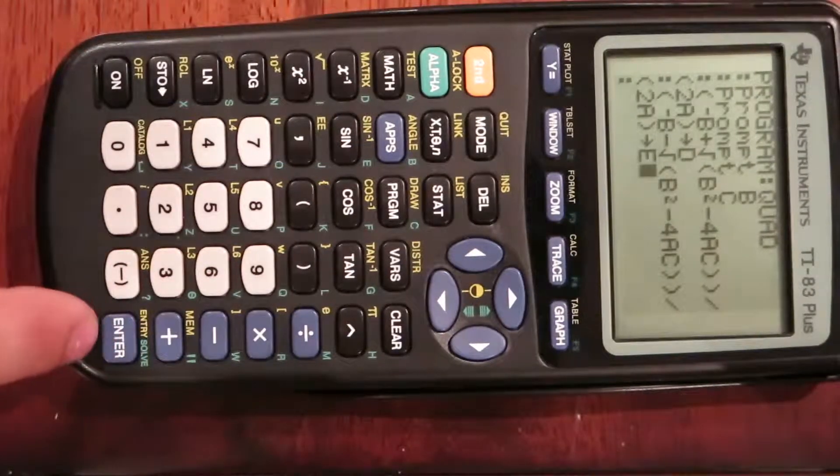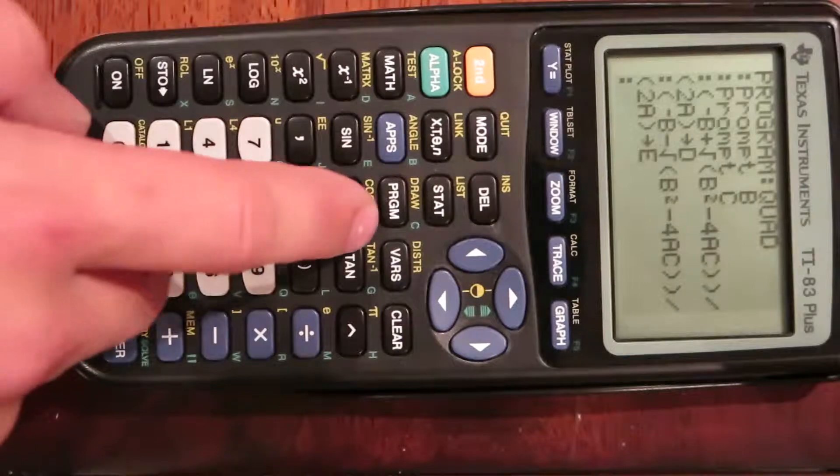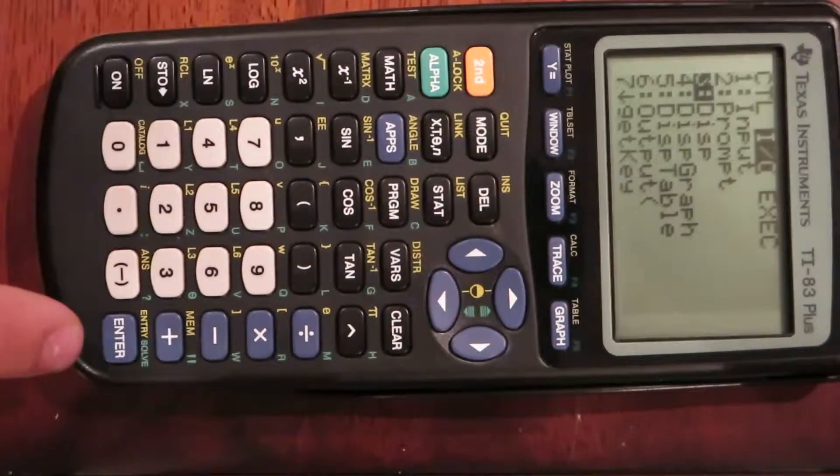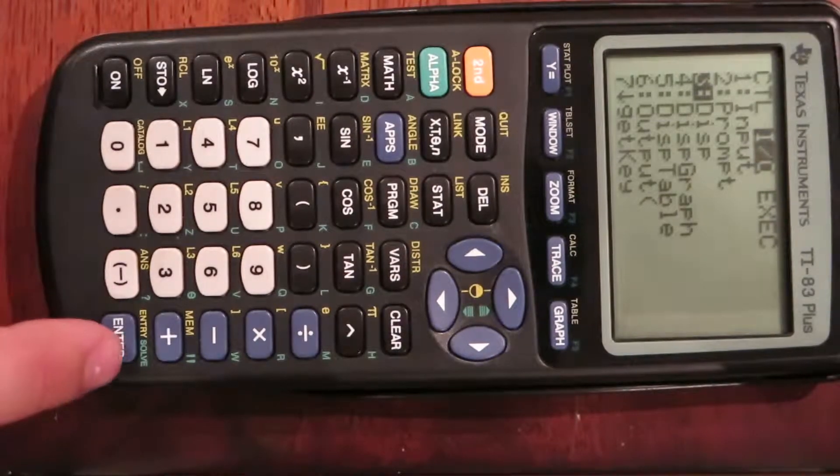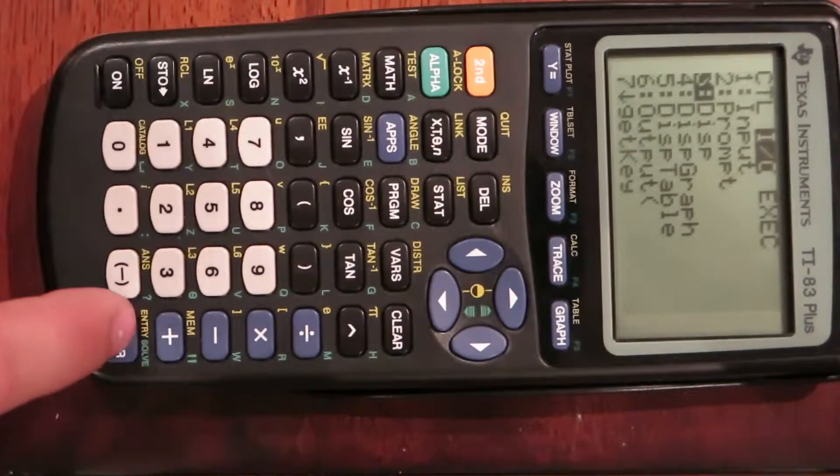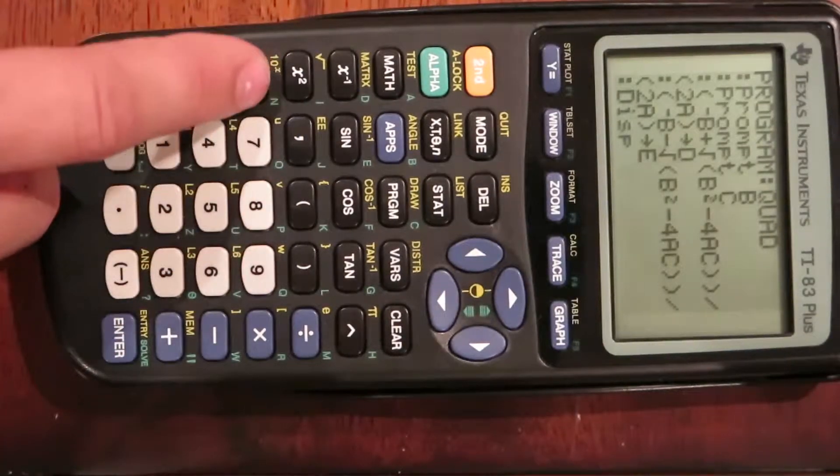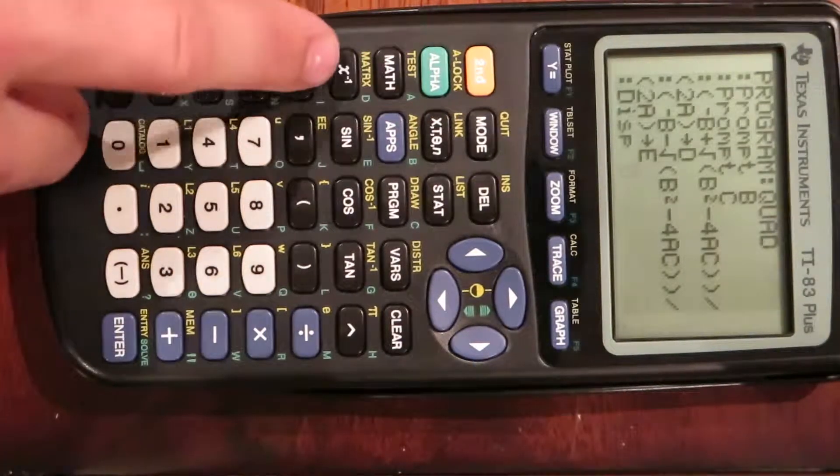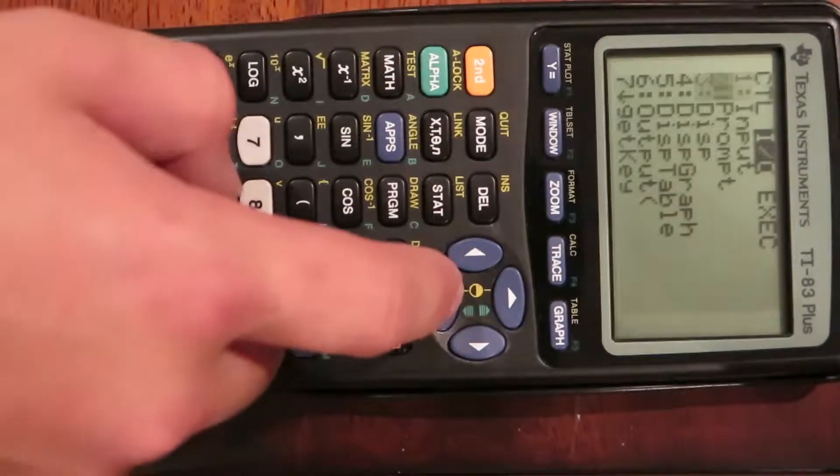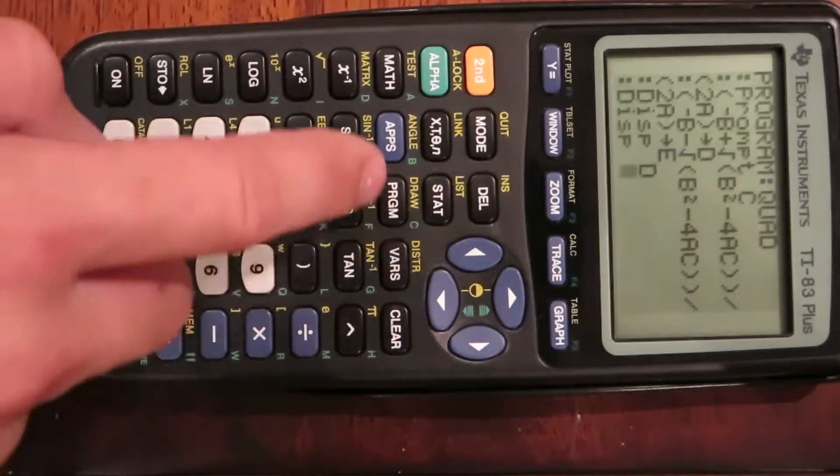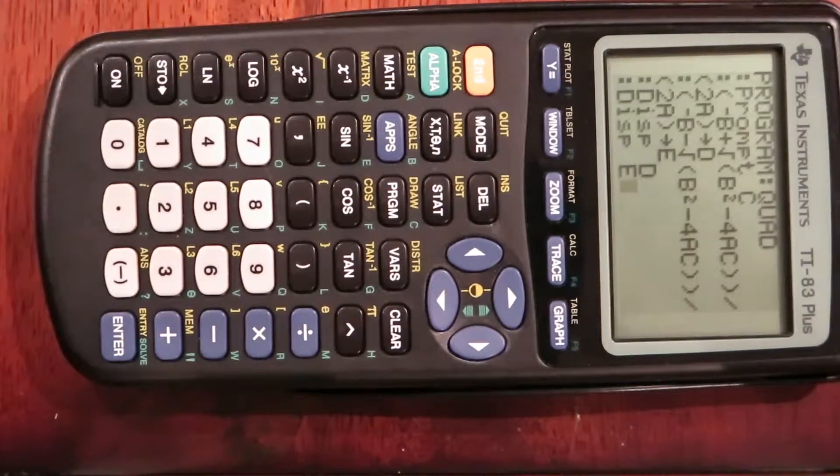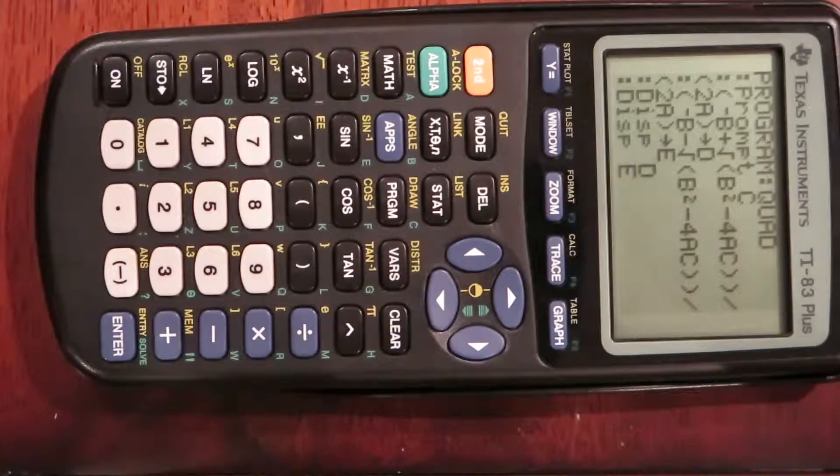Go to enter, program, input output, display. That will give you your answers at the end of your function. We want to display D and E. So go to display, alpha D, enter. Then program, input output, display, alpha E. That will give you your two answers.